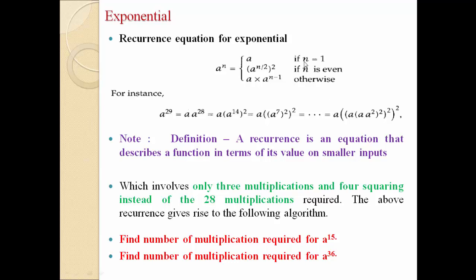We continue this process until we get n equal to 1, at which point we return a. When we complete the whole process, we get the sequence a into a into a into a raised to 2, whole power 2, raised to 2, raised to 2. Here there are 3 actual multiplications and 4 squarings, so total 7 multiplications are required instead of 28. So a raised to 29 only requires 7 multiplications when we follow this recurrence.